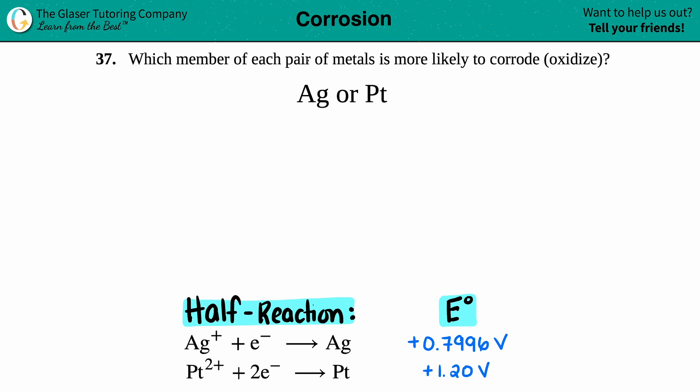Number 37. Which member of each pair of metals is more likely to corrode or more likely to oxidize? So we have our pair of metals here. We have a sample of silver, which is Ag, and platinum, which is Pt, and we have to see which one is going to corrode or which one is going to oxidize first.